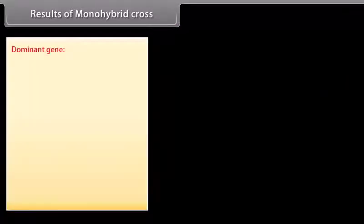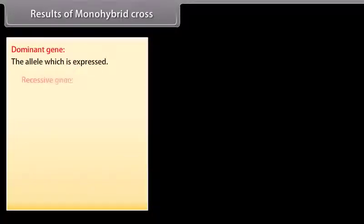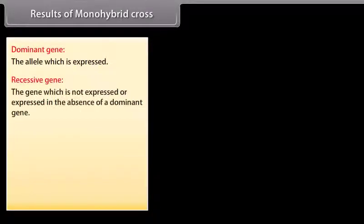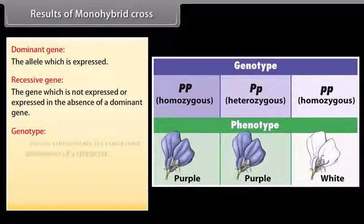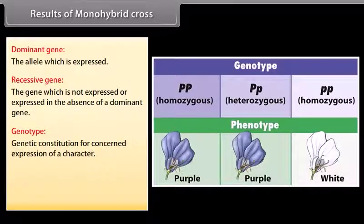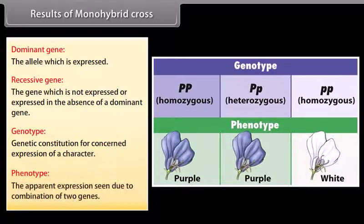Results of monohybrid cross. Dominant gene: The allele which is expressed. Recessive gene: The gene which is not expressed or expressed in the absence of a dominant gene. Genotype: Genetic constitution for concerned expression of a character. Phenotype: The apparent expression seen due to combination of two genes.